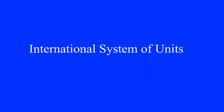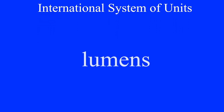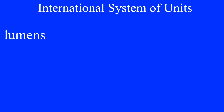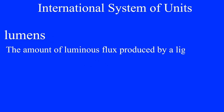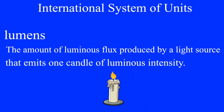In the International System of Units, a unit of measurement called lumens is used to measure the amount of luminous flux. Lumens are defined as the amount of luminous flux produced by a light source that emits one candle of luminous intensity. The unit of measurement for lumens is represented by the symbol LM. Illumination is measured in lux, symbolized by LX, which equals one lumen per square meter.